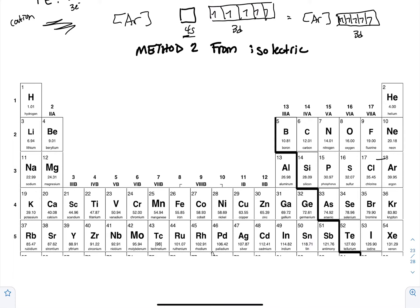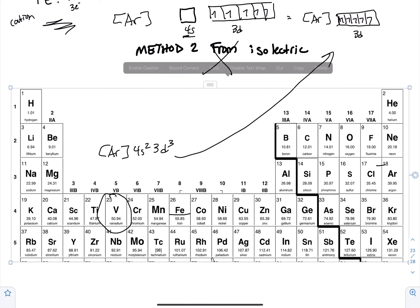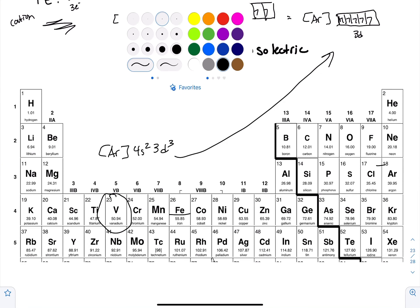All right, so this is where you cannot use the isoelectric thing. If we used iron and we just said, 'Oh, he's losing three electrons, that's like saying he's actually vanadium,' it doesn't work for the transition metals. Because vanadium's configuration would be argon, and then 4s² 3d³. Do you see how that is not the same thing as argon 3d⁵? Not the same at all.